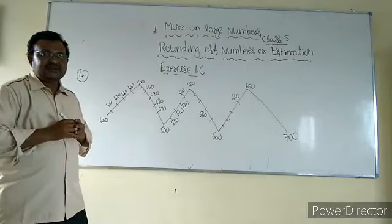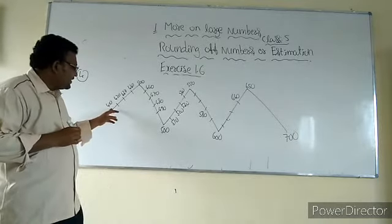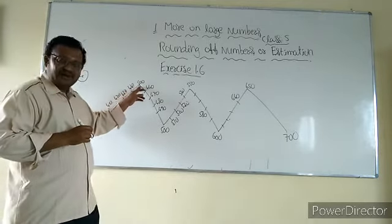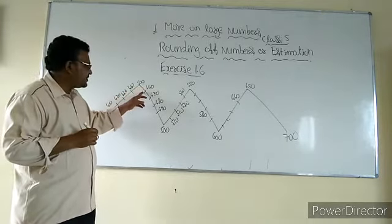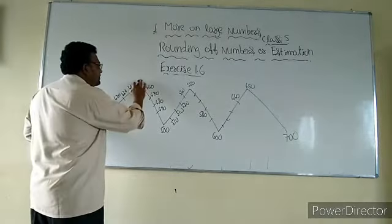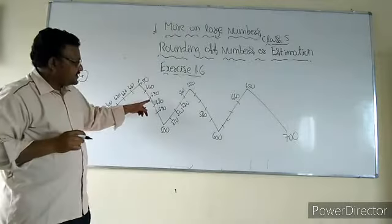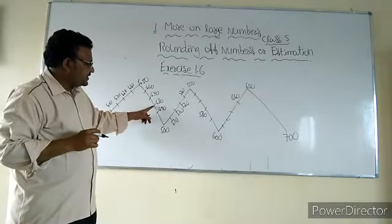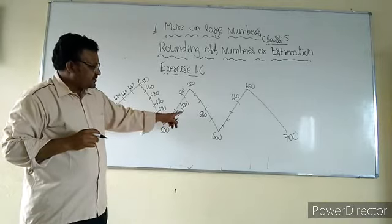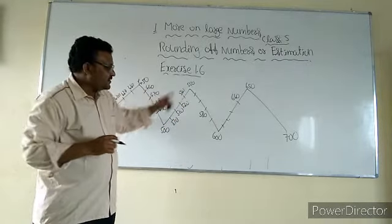Just observe the figure. The sequence goes: 400, 420, 430, 440 — then 450, then 460, 470, 480, 490, 500, 510, 520, 530, 540, 550. You can see these numbers are going up in tens within the sequence.